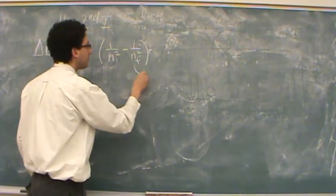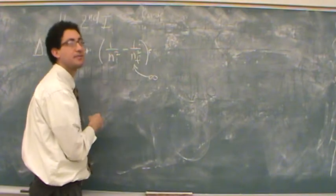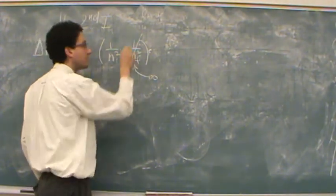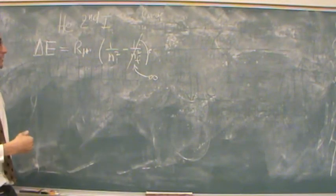n final for an ionized is infinity. It goes to infinity. That means this term is going to be gone because 1 over infinity squared is essentially zero.